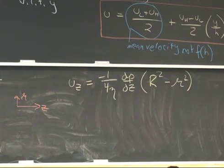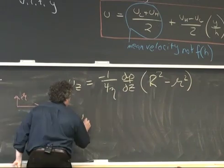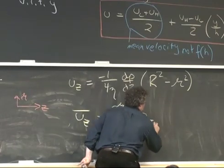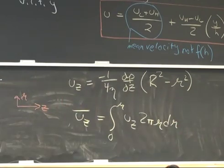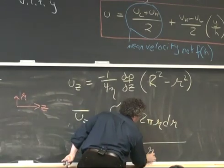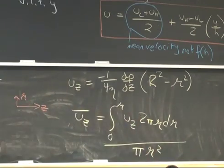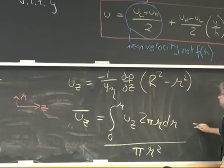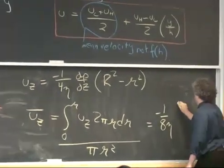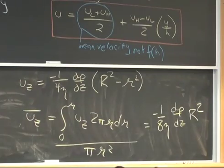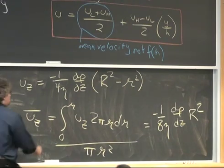That's the velocity distribution. If I integrate this to find the mean velocity — integrating from 0 to capital R — I find that the average velocity is basically the same expression but with an extra factor of one-half. So I get minus 1 over 8 eta times dp/dz times R-squared, where capital R is the radius of the tube.